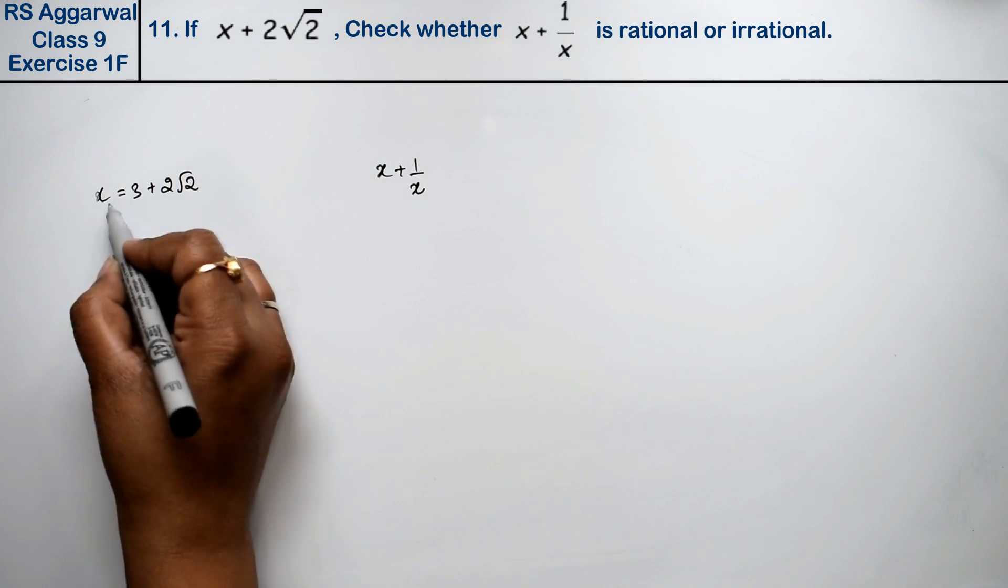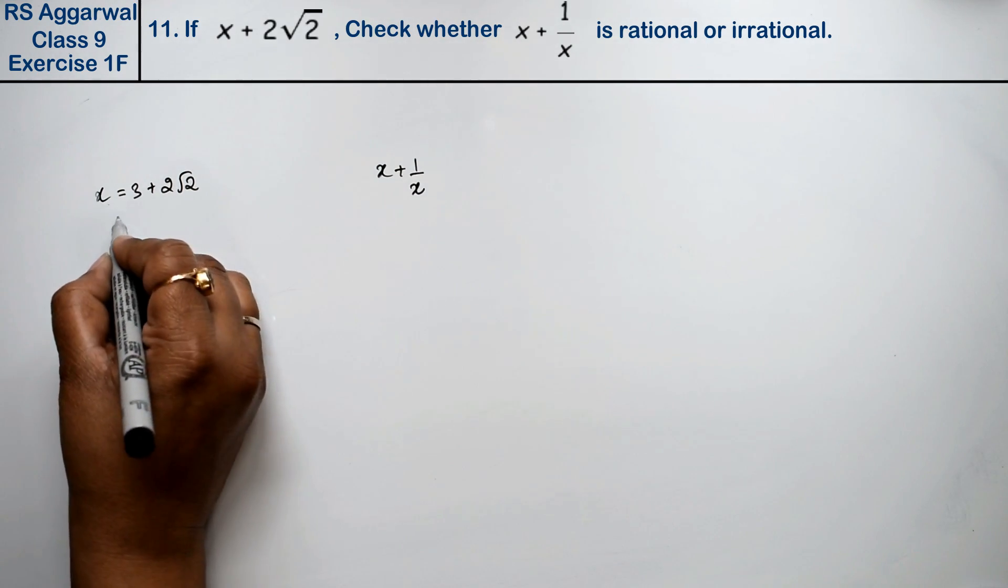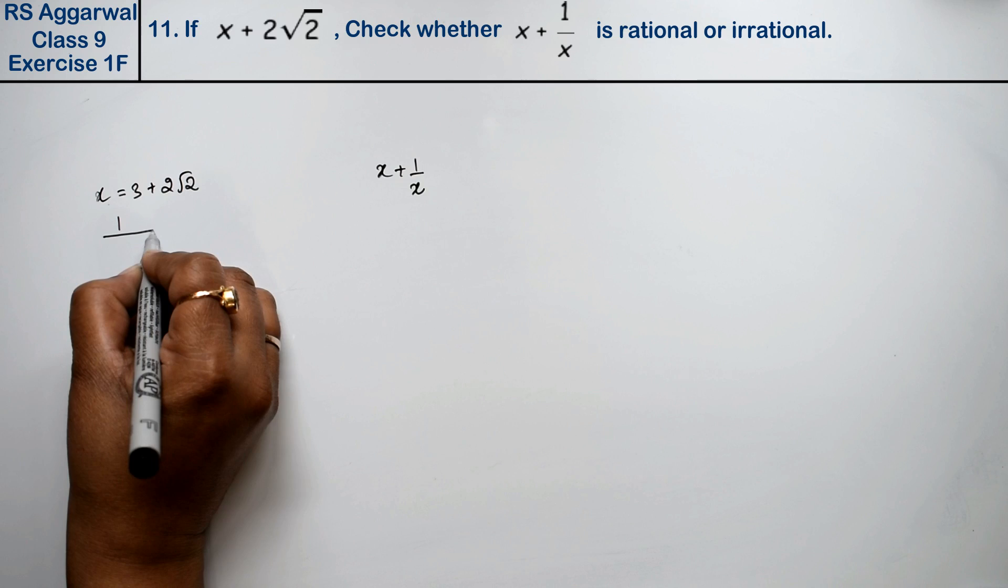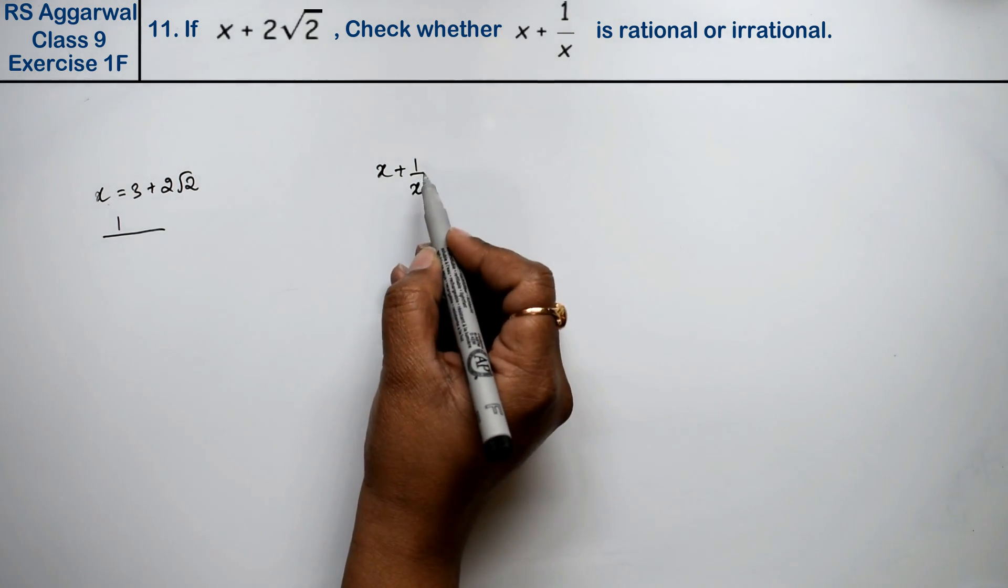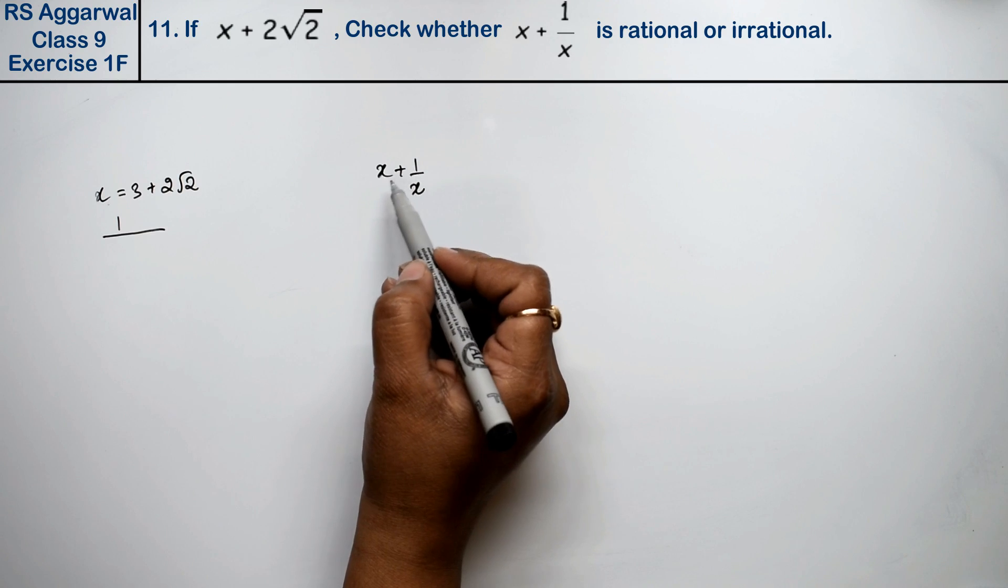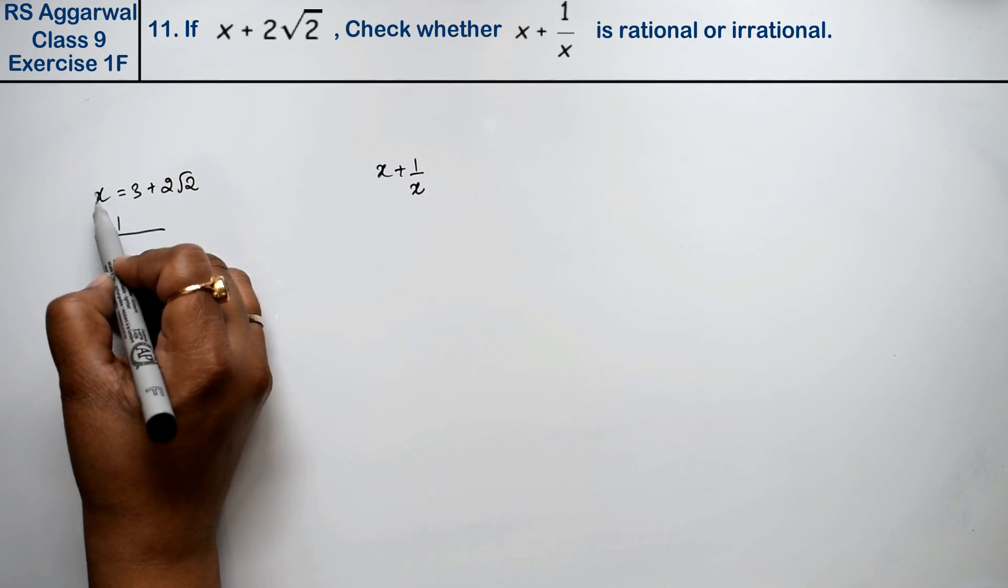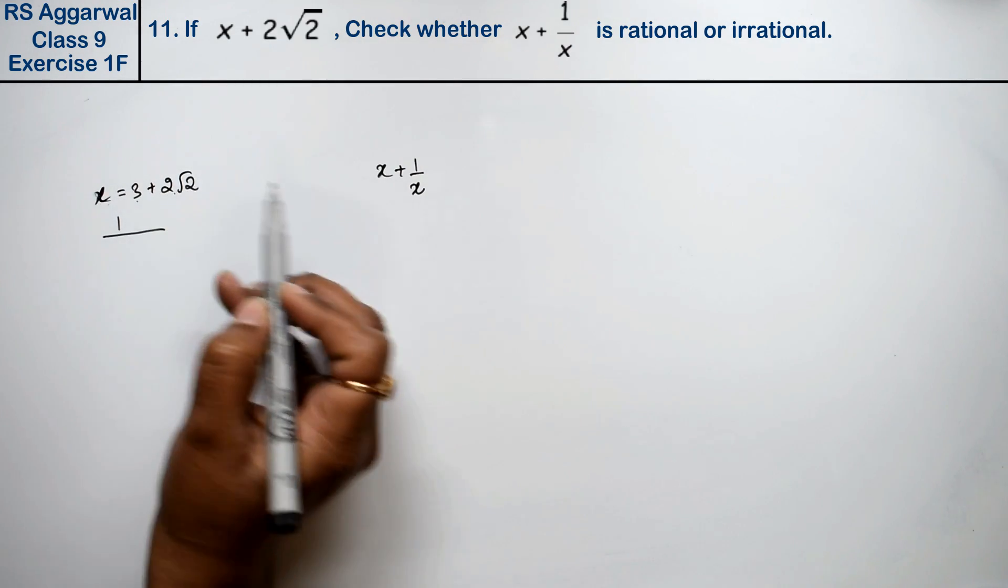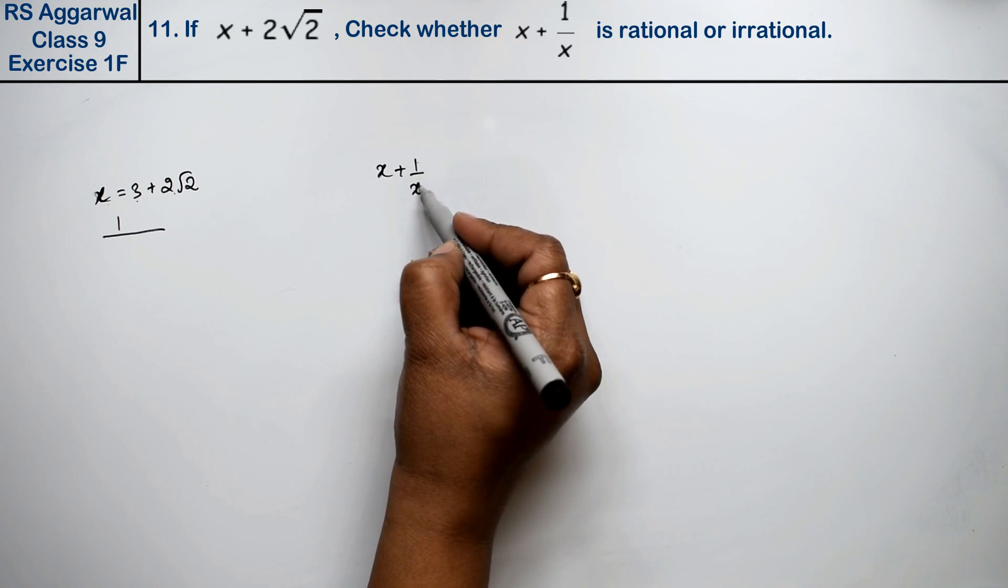Now we have x value divided by 1 upon x value. This type of question is very important. This whole exercise is very important, please take care of it. Now we have x value is 3 plus 2 root 2.